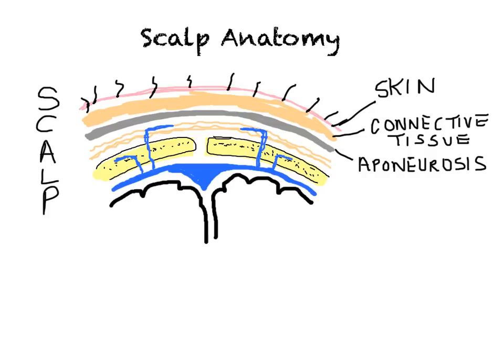The third layer is the epicranial aponeurosis. This is a tendinous sheath that is connected to the frontalis muscle in front and the occipitalis muscle in the nape of the neck, and it also extends from ear to ear. While it is firmly adherent to the two layers above, it slides easily on the two layers below.